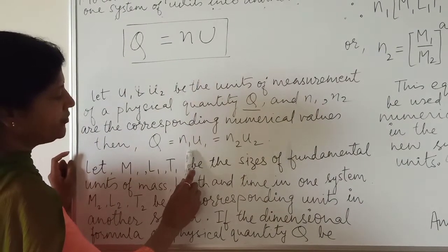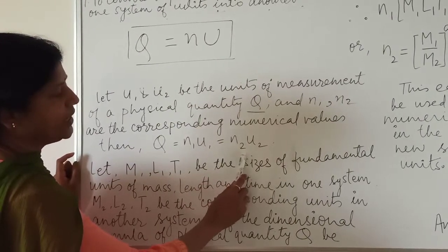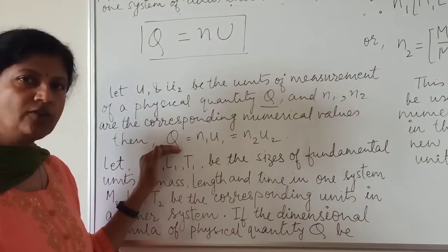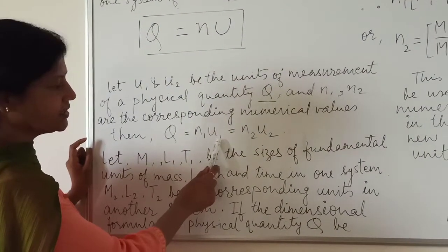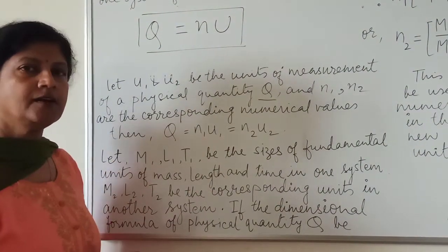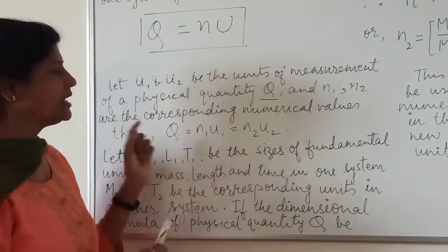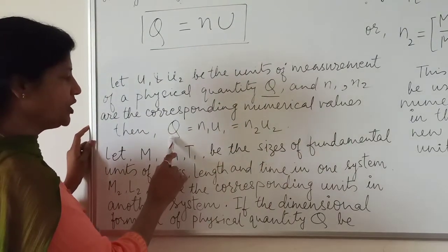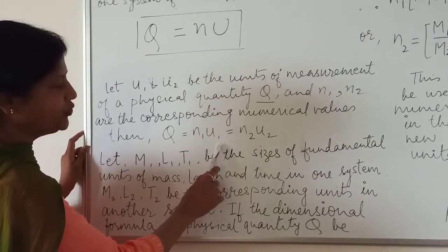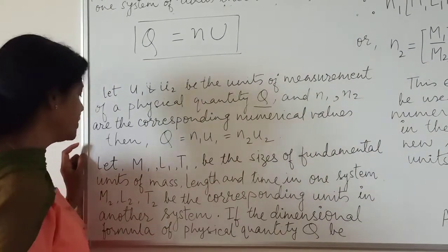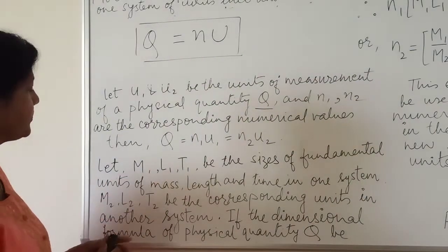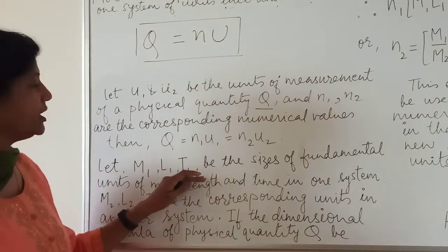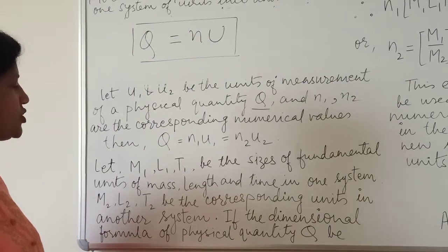Then, Q is equal to N₁U₁ is equal to N₂U₂. Let M₁, L₁, T₁ be the sizes of fundamental units of mass, length and time in one system.